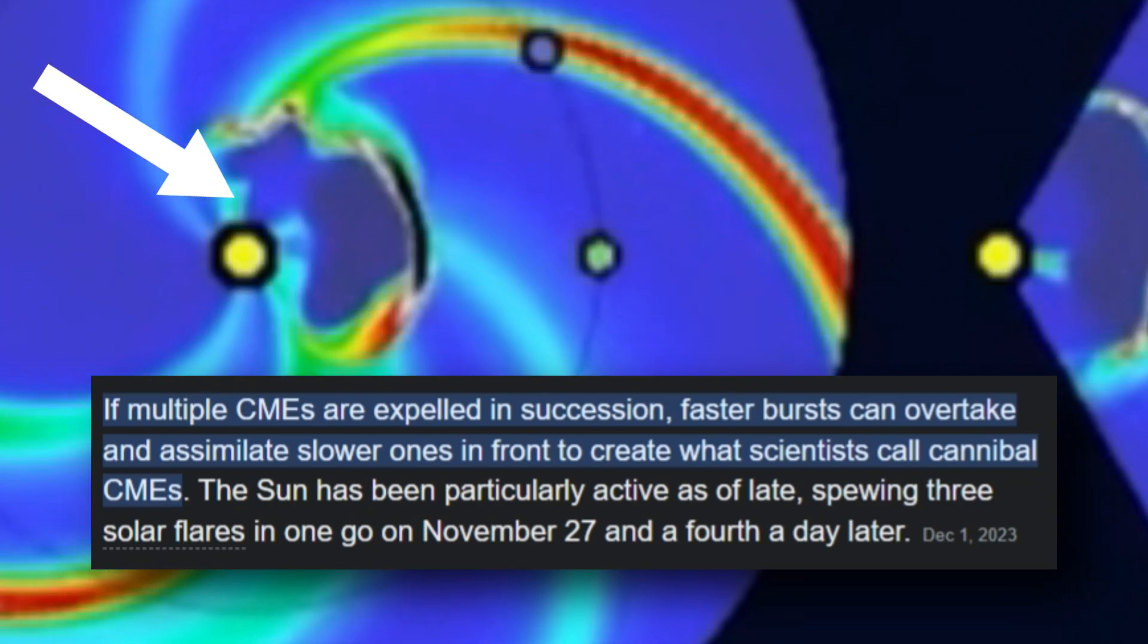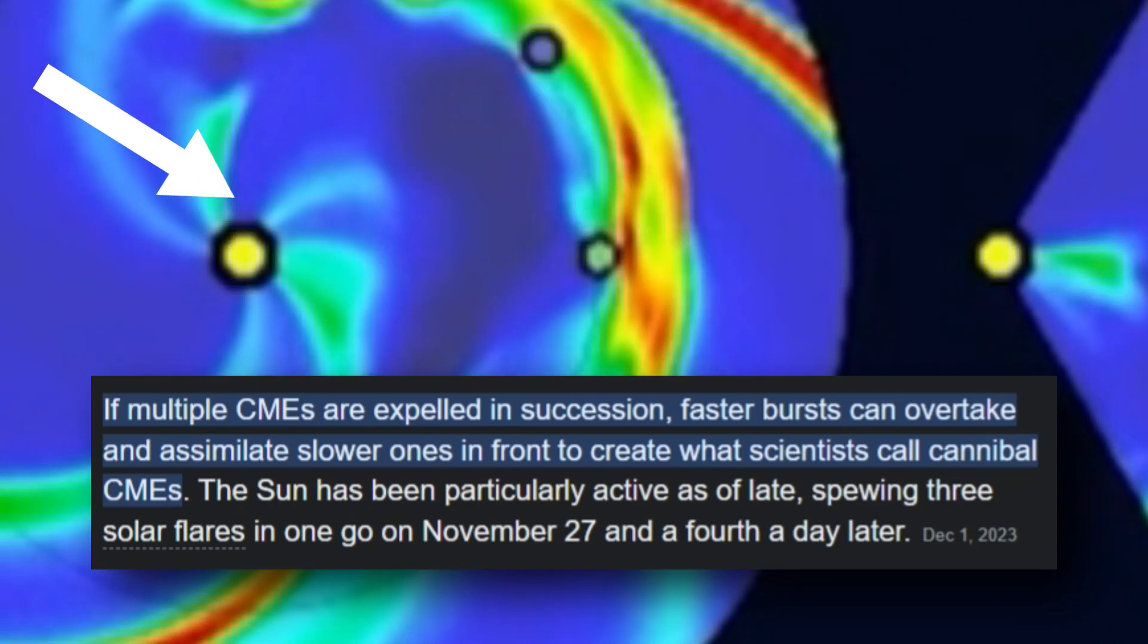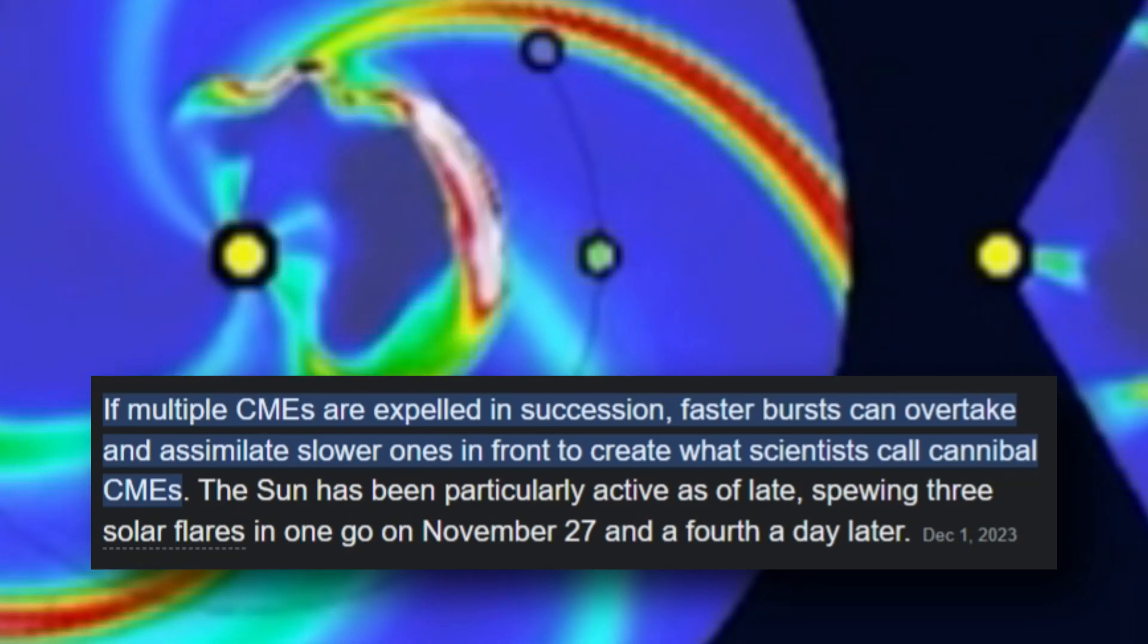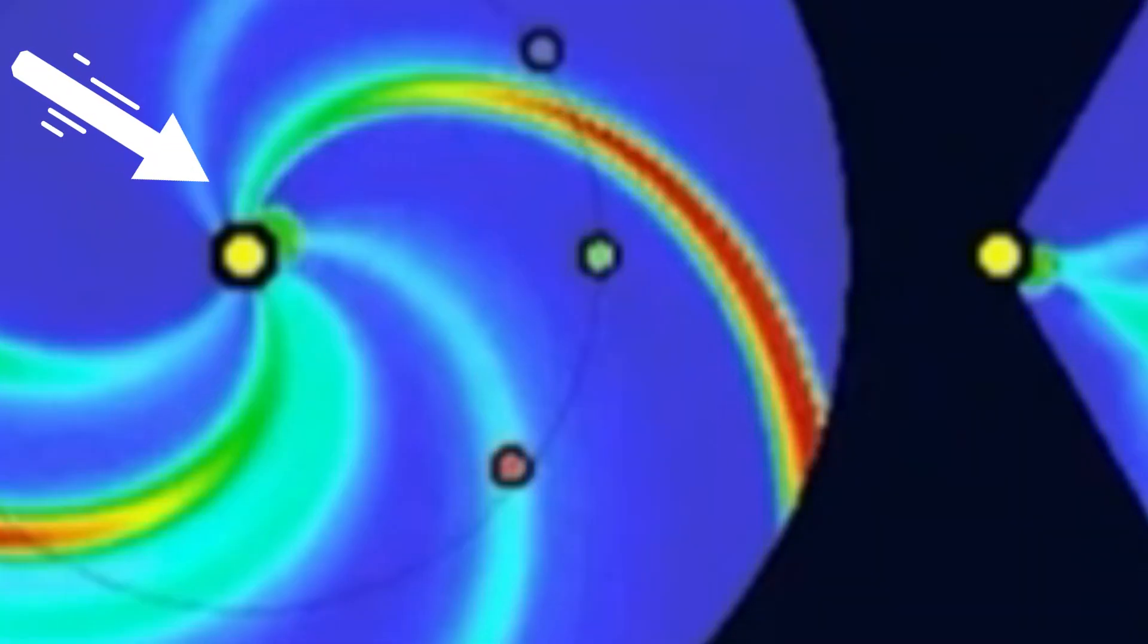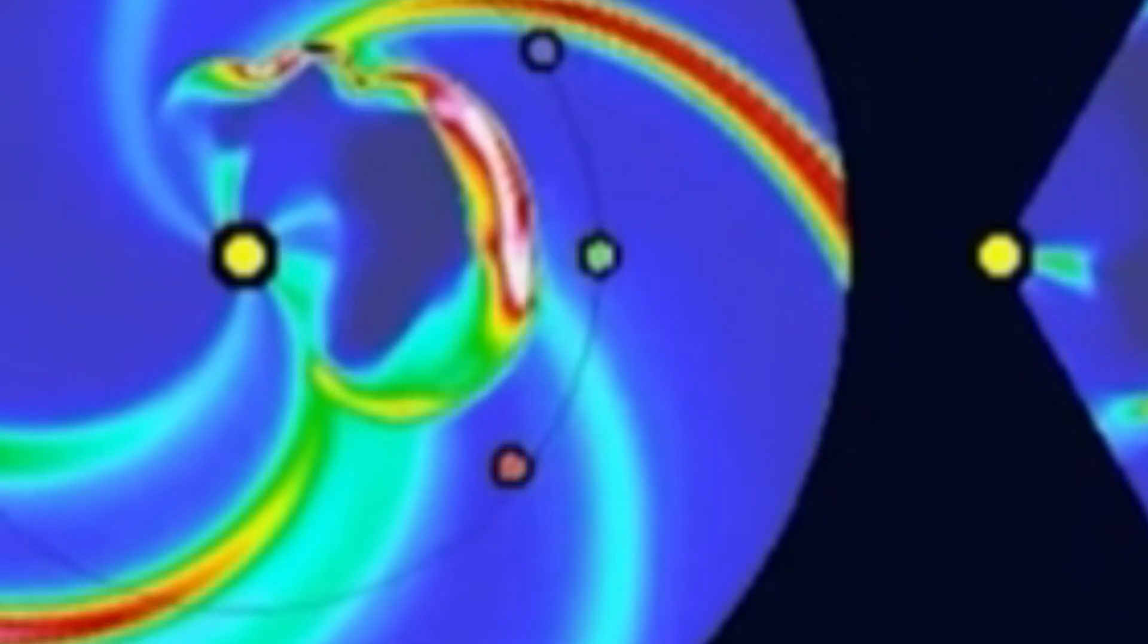Looking at this chart you can see two CMEs leaving the sun, and the second of which overtaking the first before it hits that green dot which is Earth.